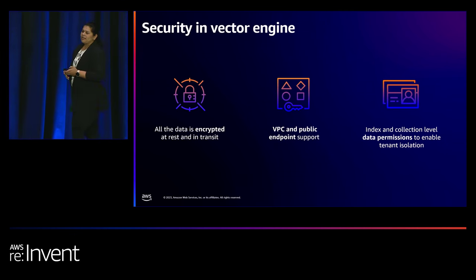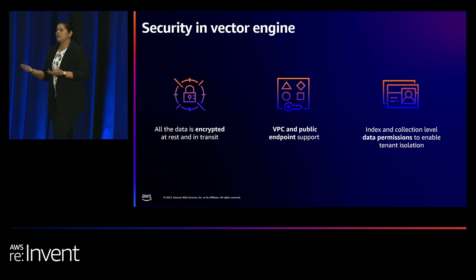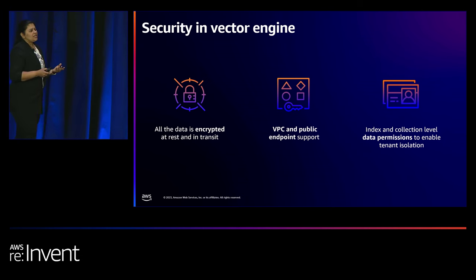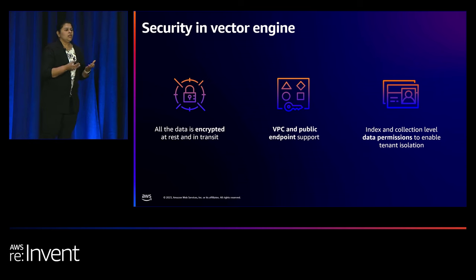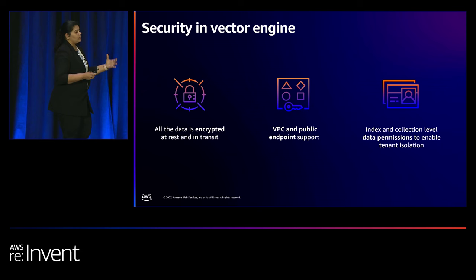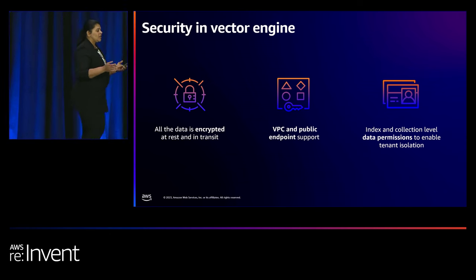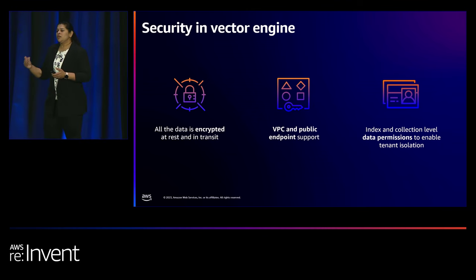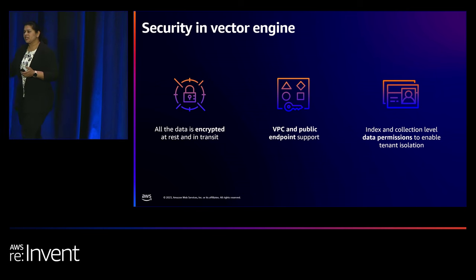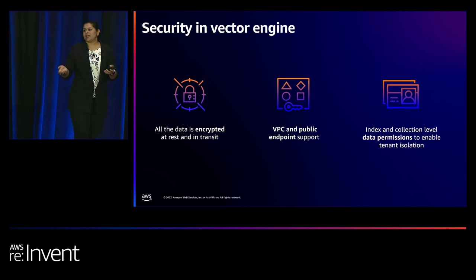All data in Vector Engine is encrypted at rest and in transit. You can bring your own KMS key or use the AWS service-provided key. Many customers want VPC endpoint support because of the sensitivity of embedding data, so you can store data behind a public endpoint or within a private link. You can set account-level policies, individual collection-level policies, or go down to index policies — it's hierarchical and flexible.